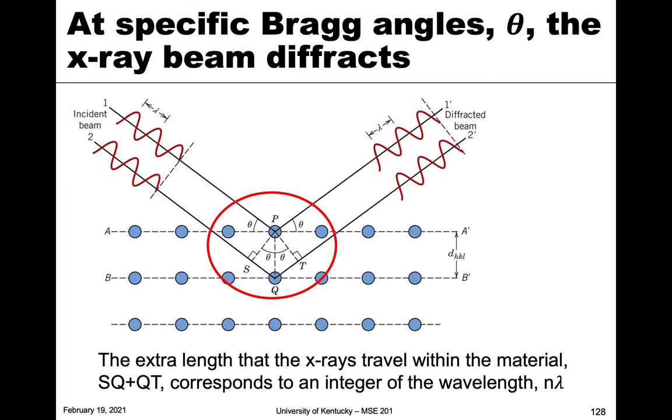At these specific angles theta, these are known as specific Bragg angles if the x-ray beam diffracts. If this beam comes in at theta and leaves at theta, this would then be the diffracted beam.